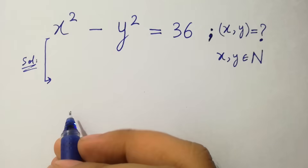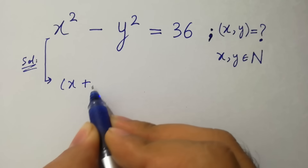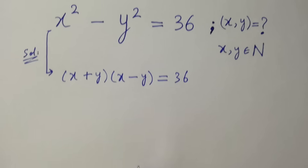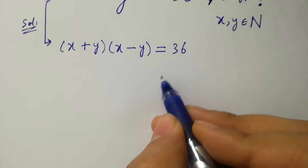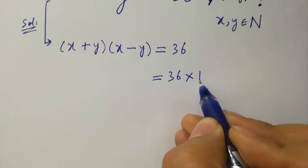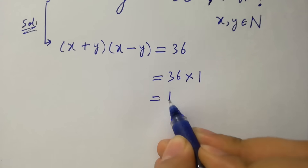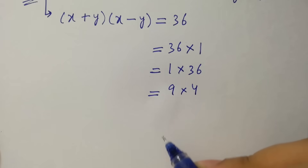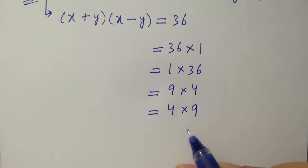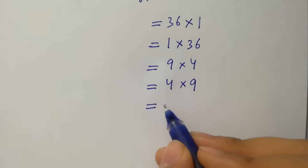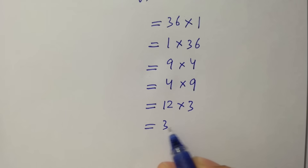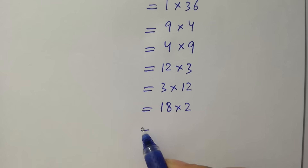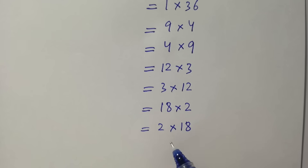This problem is the same as (x+y)(x-y) = 36. We have factor pair choices: 36×1, 1×36, 9×4, 4×9, 12×3, 3×12, 18×2, and 2×18. So we have 8 choices here.